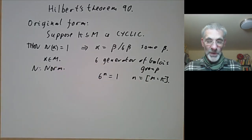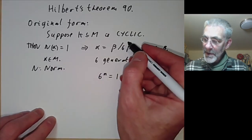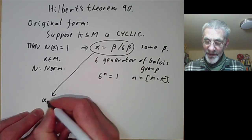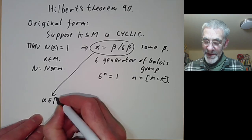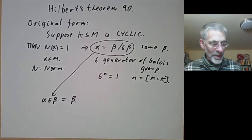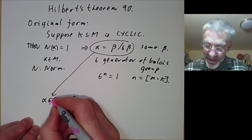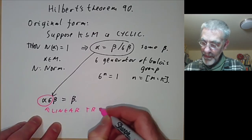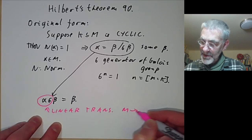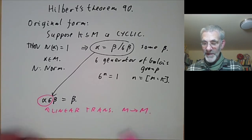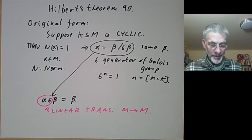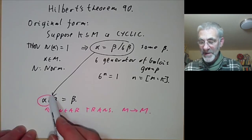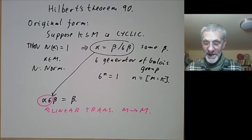Given that the norm of alpha equals 1, we can rewrite the equation as alpha times sigma of beta equals beta. We think of alpha times sigma as a linear transformation from M to M, where M is viewed as a vector space over K. Sigma is an element of the Galois group acting, and alpha means multiplication by alpha; we compose them into a single linear transformation.